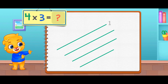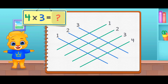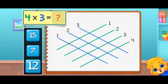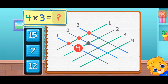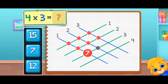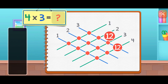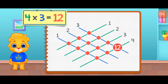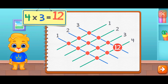Four times three equals — one, two, three, four, five, six, seven, eight, nine, ten, eleven, twelve. Four times three equals twelve.